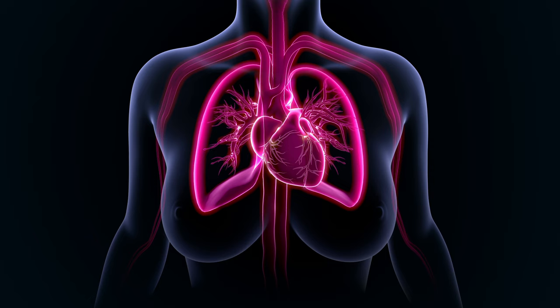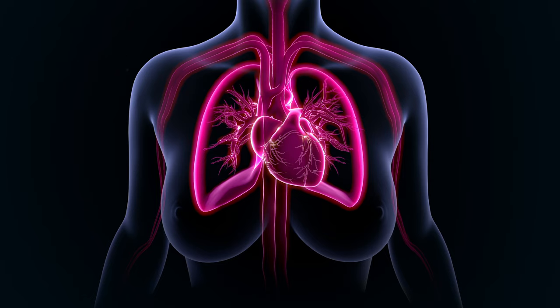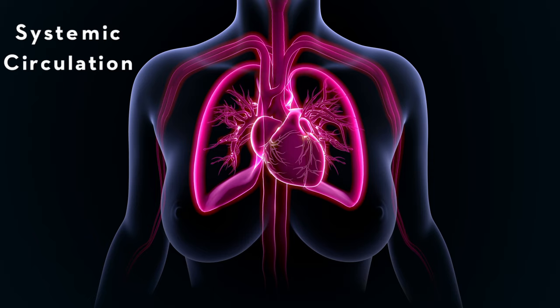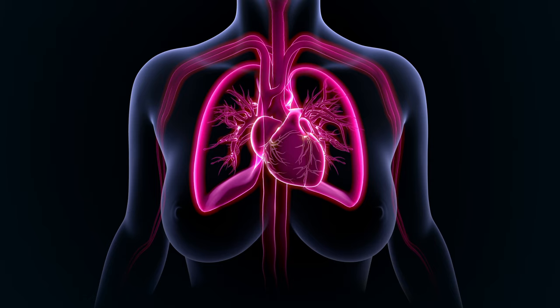This image offers a comprehensive view of blood circulation within our body. The process can be divided into two main loops: the pulmonary circulation and the systemic circulation. Pulmonary circulation involves the flow of oxygen-poor blood from the heart to the lungs, where it picks up oxygen and releases carbon dioxide. In systemic circulation, oxygen-rich blood is transported from the heart to the rest of the body, delivering oxygen and nutrients to cells and tissues before returning to the heart as oxygen-poor blood. This continuous cycle is crucial for maintaining life and sustaining our body's various functions.